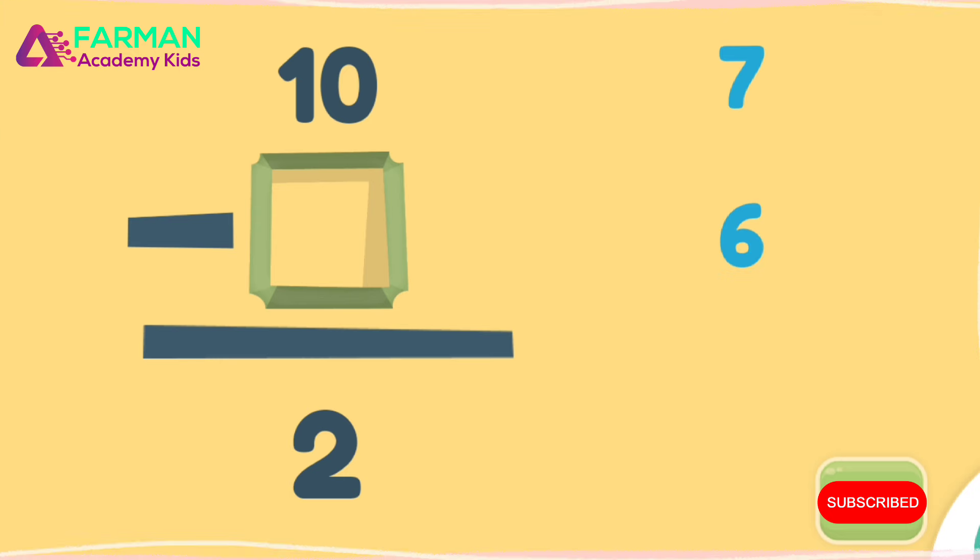What minus seven is two? Nine minus seven is two.